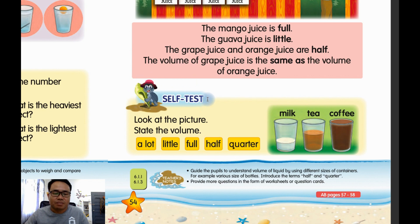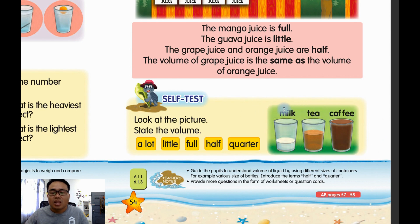Now we go for the self-test. Look at the picture here — there are three glasses. You state the volume. We look at the milk first. We can say milk is measured in liters.